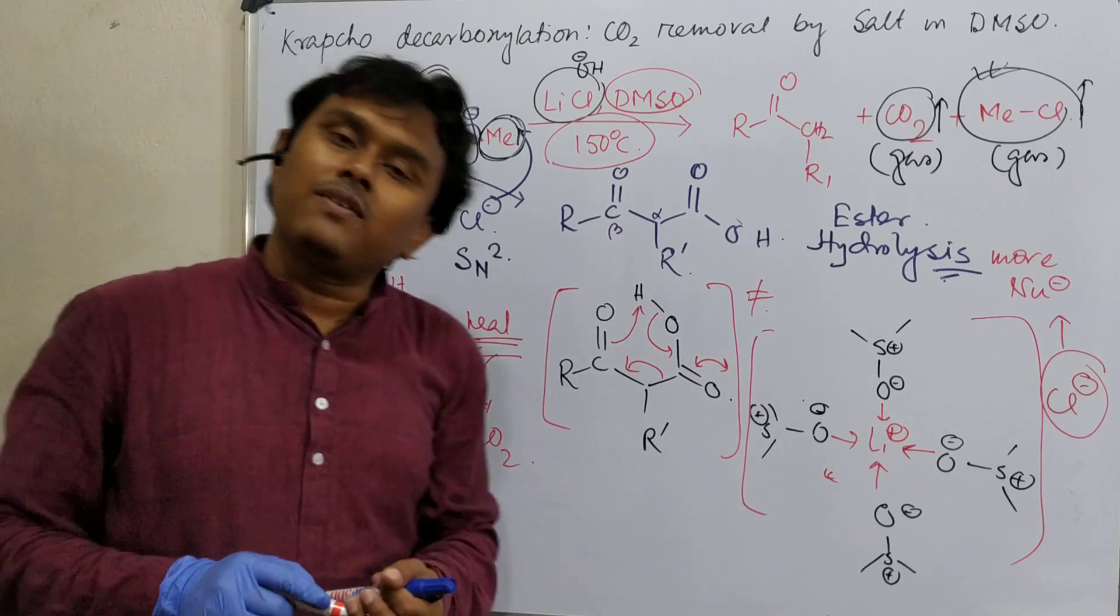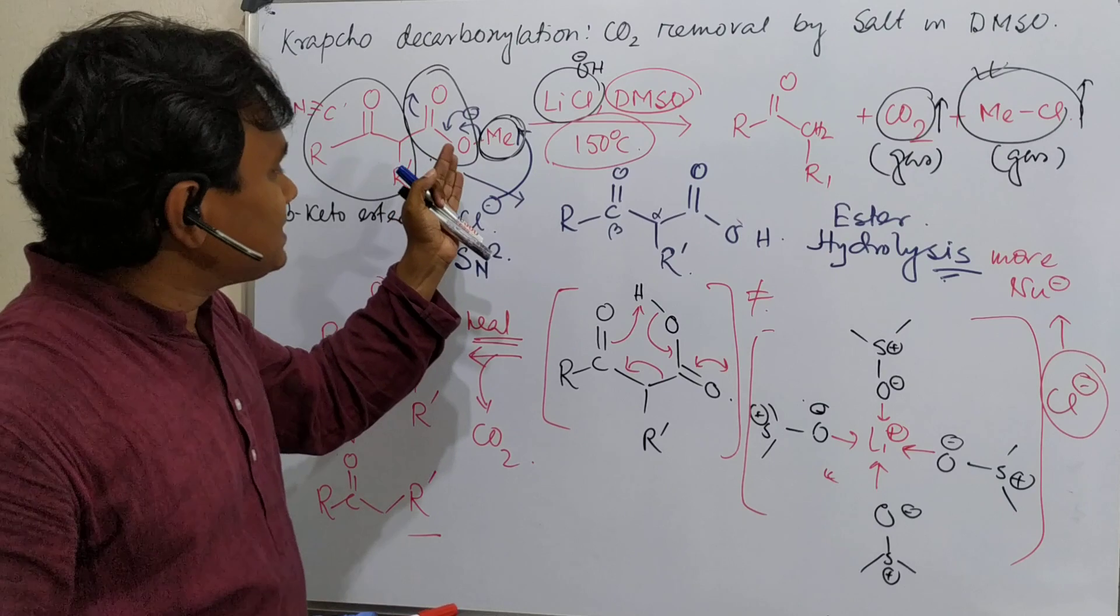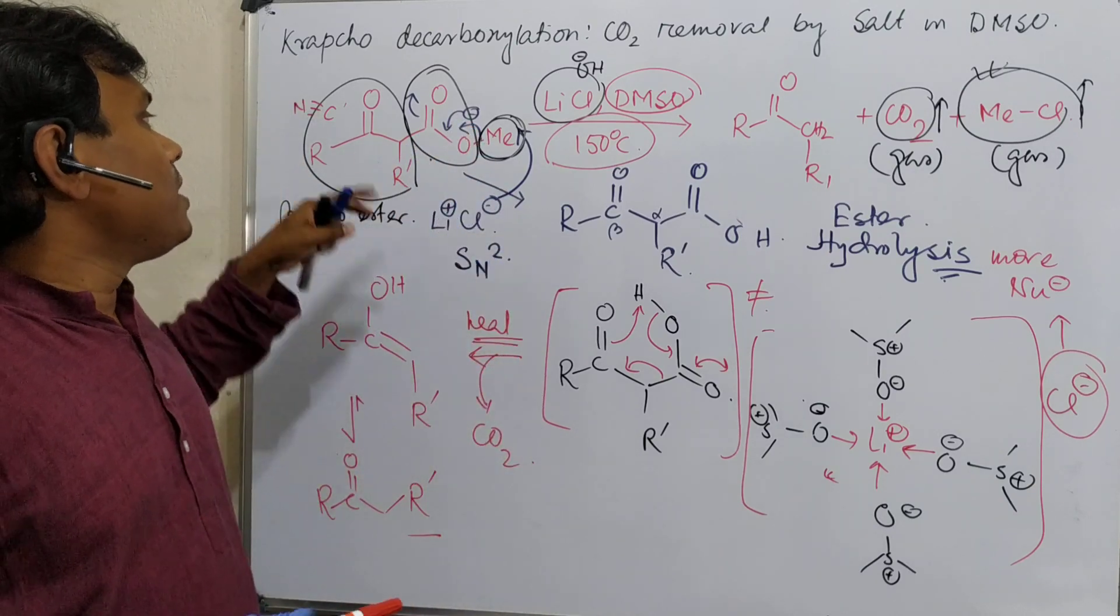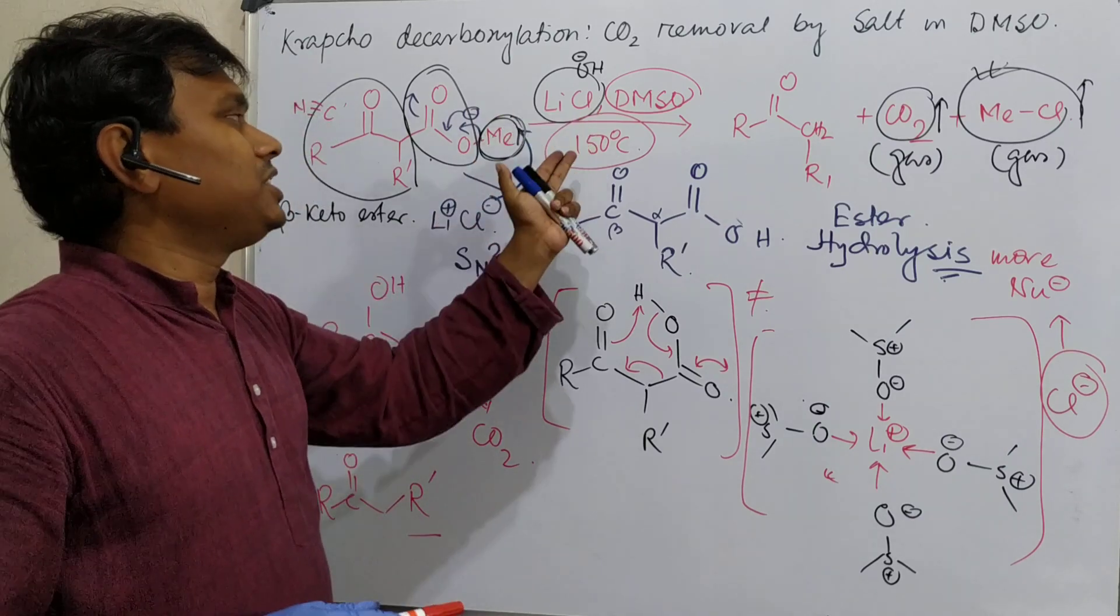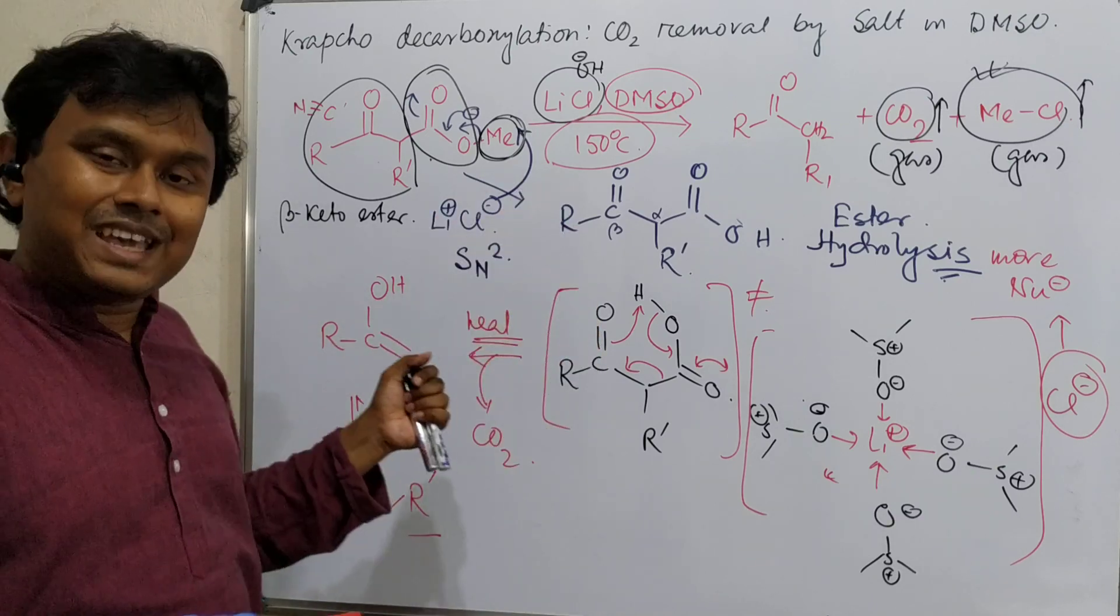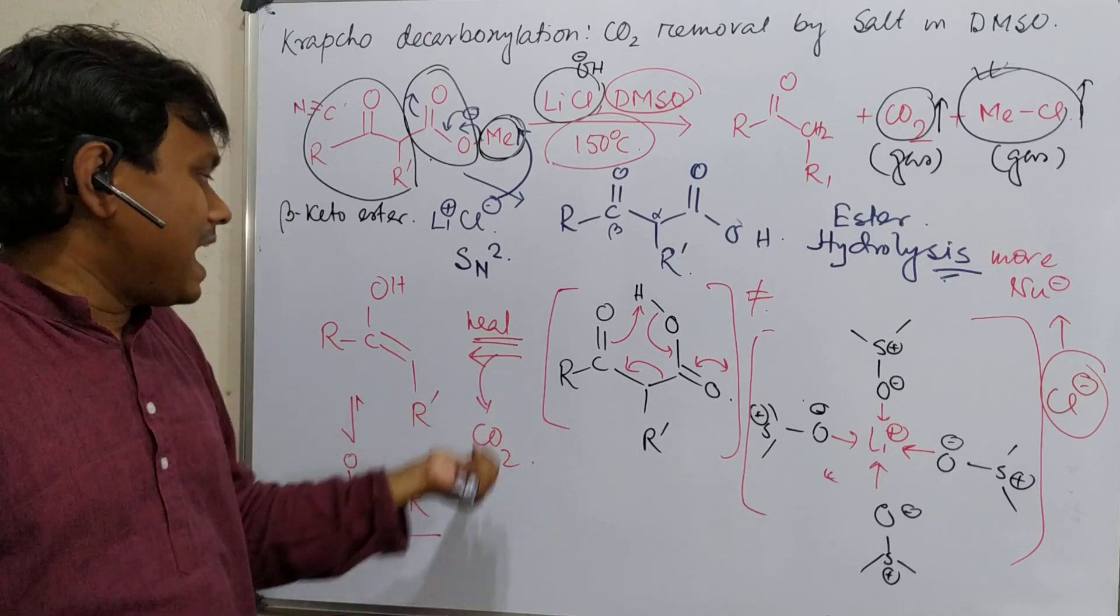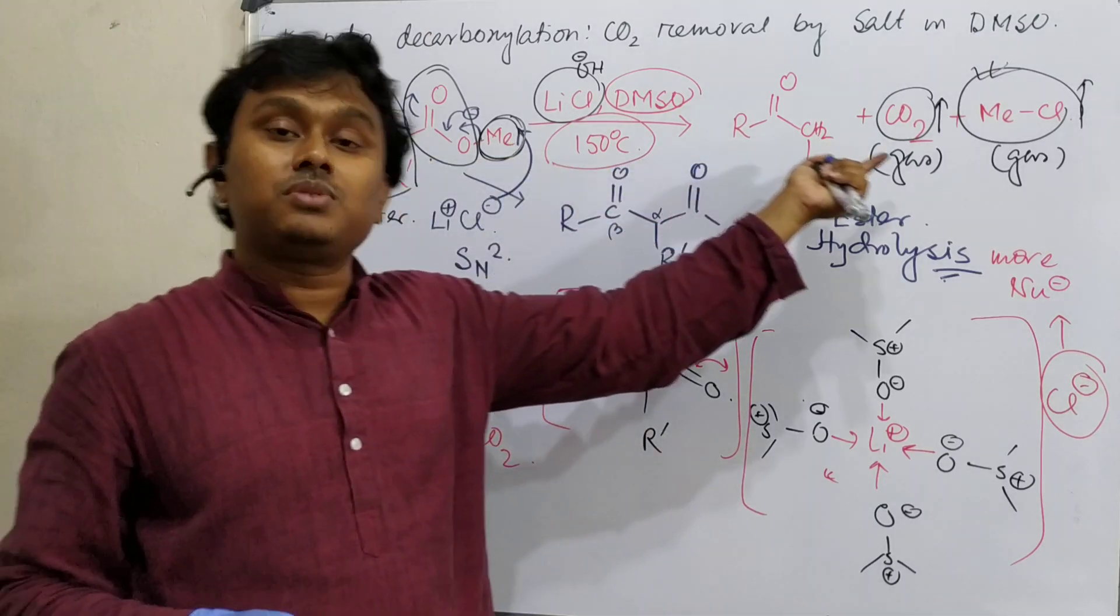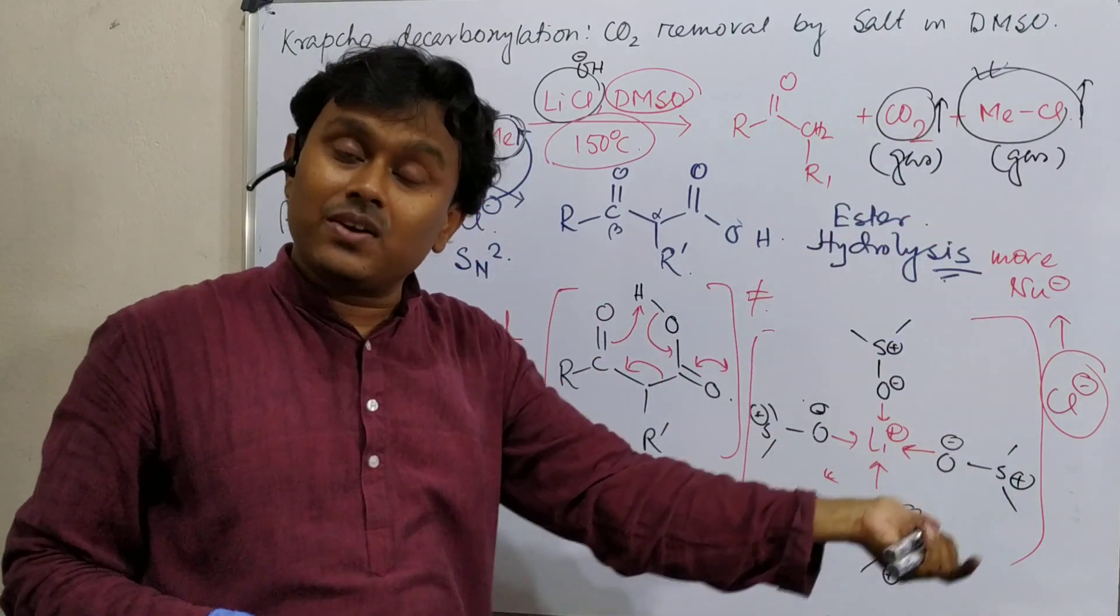So this is the overall discussion about the Krapcho decarboxylation. So what we have learned? We have learned salt-assisted hydrolysis followed by decarboxylation of beta-ketoester in presence of lithium chloride-DMSO combination. We have discussed the mechanism - first it's hydrolysis, second it's decarboxylation. And this process is entropy driven because one molecule produces three molecules, and among these three, two are gases.